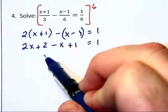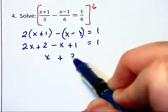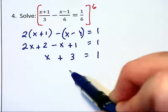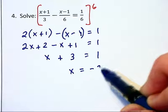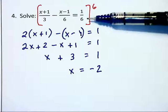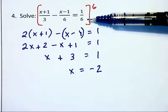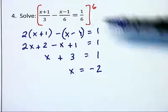Simplifying on the left, we have x plus 3 equals 1, and x then is equal to negative 2. There is no possibility of getting a 0 in the denominator because there are no x's in the denominator, so we're going to assume that this is an okay solution.